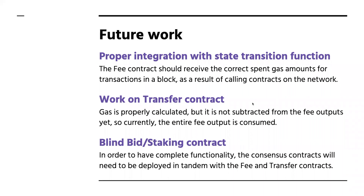As for future work, first we need proper integration with the actual state transition function so the fee contract receives the correct spent gas amounts for all contract calls in the block — this will mostly be done on the Golang side. Additionally, the transfer contract needs work: gas is properly calculated but not yet being subtracted from the fee, so right now the entire fee output is consumed. Finally, once the two remaining Genesis contracts — the blind bid contract and the staking contract — are complete, we will have all four contracts ready and basic blockchain functionality fully facilitated through the virtual machine.